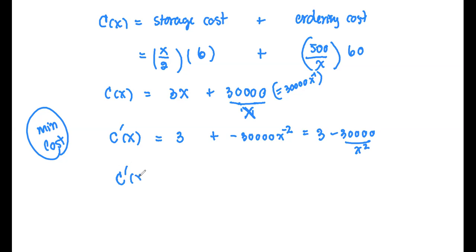For the critical value, by setting up C prime at x equals 0, which is 3 minus 30,000 divided by x squared, solve for x. So 0 equals, with the common denominator x squared, we have 3x minus 30,000. Therefore, we get 3x minus 30,000 equals 0, or x equals, this is x squared.